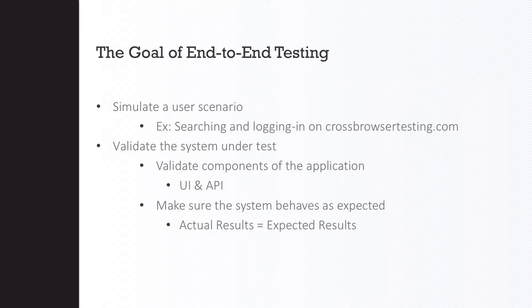Everybody uses the login example because it actually touches all of the systems. It's an easy example for people to understand because you have a UI, buttons you're clicking around, screens, mobile screens — whatever you have. You have databases, you probably have external authentication, and there's probably a third party in the case of things like single sign-on, or using Google sign-on or Facebook sign-on. It's a good example of how one scenario, one user action, can actually touch a ridiculous amount of subsystems.